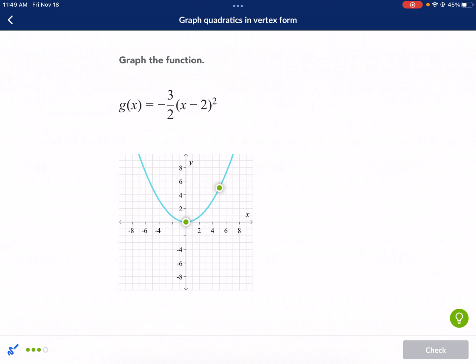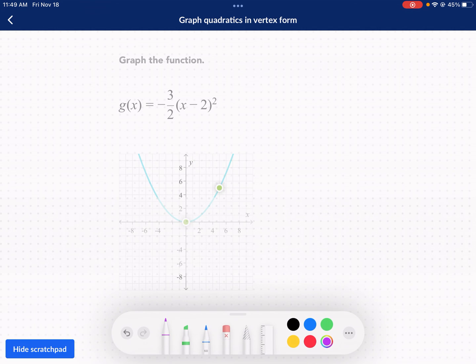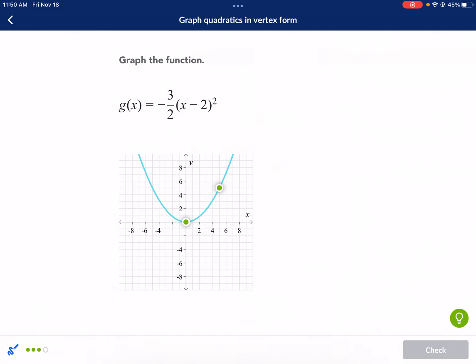All right. Here we go. Last one. Now, it doesn't look like there's a K here. There is. The K is plus 0. So I know my Y value for my vertex is 0. But my X value is going to be positive 2. So there's my vertex 2, 0. Let me just slide that over.